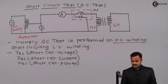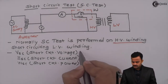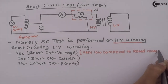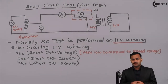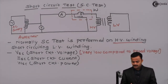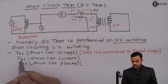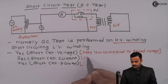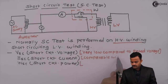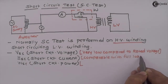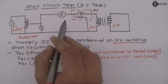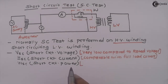VSC is very low compared to the rated voltage. If voltage is very low, the losses that depend on voltage — core losses — will also be less. Hence, the wattmeter will not measure core losses, or they will be very less compared to copper losses. Copper losses will dominate because the short circuit current is comparable with the full load current, so a significant amount of current flows through the windings.